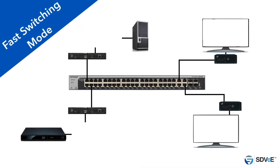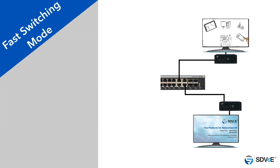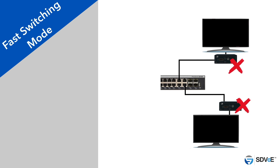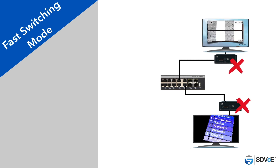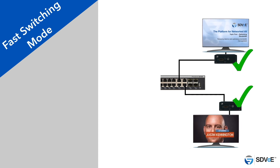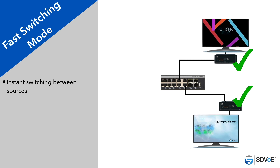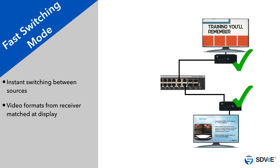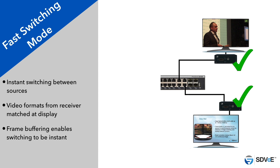Fast switching is very important for applications where source switching happens regularly. No one wants to see a blank screen while the display works out how to display the image. SDVoE has a fast switching feature which, when applied, ensures each display instantly switches sources. To achieve this, SDVoE matches any given video format to the receiver connected to the display, which in turn outputs the image to the preferred resolution of that display. Frame buffering is used, but only 1–2 frames of latency will be added, making this an ideal solution for residential and presentation applications.